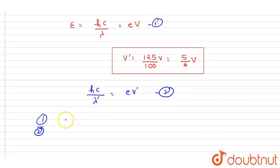So if I divide the equations, I will write equation one by equation two. It will be lambda dash by lambda is equal to V by V dash. You can see the inverse relation between V and lambda.